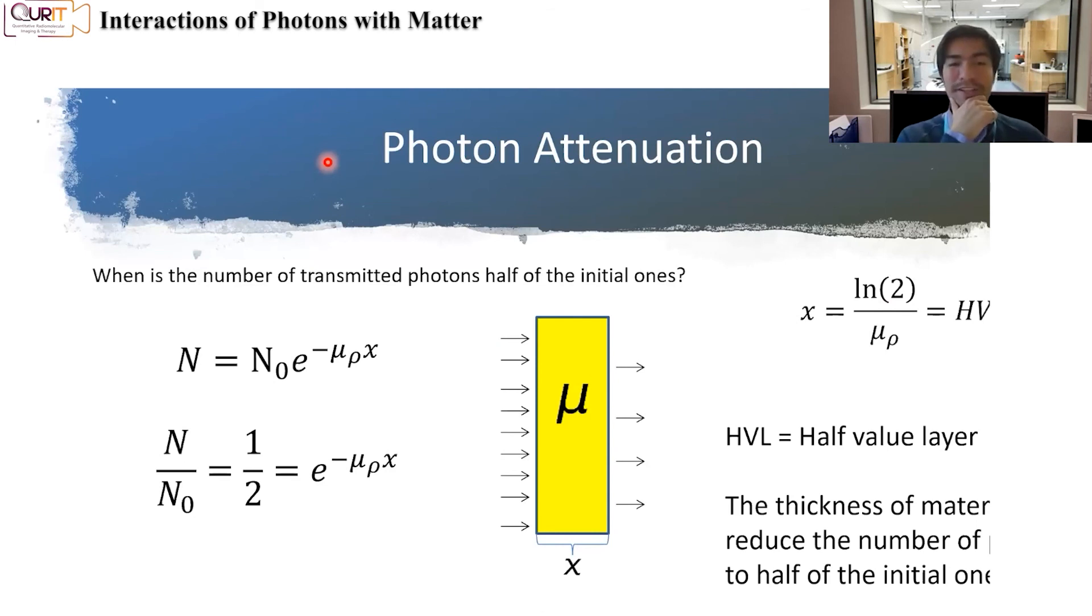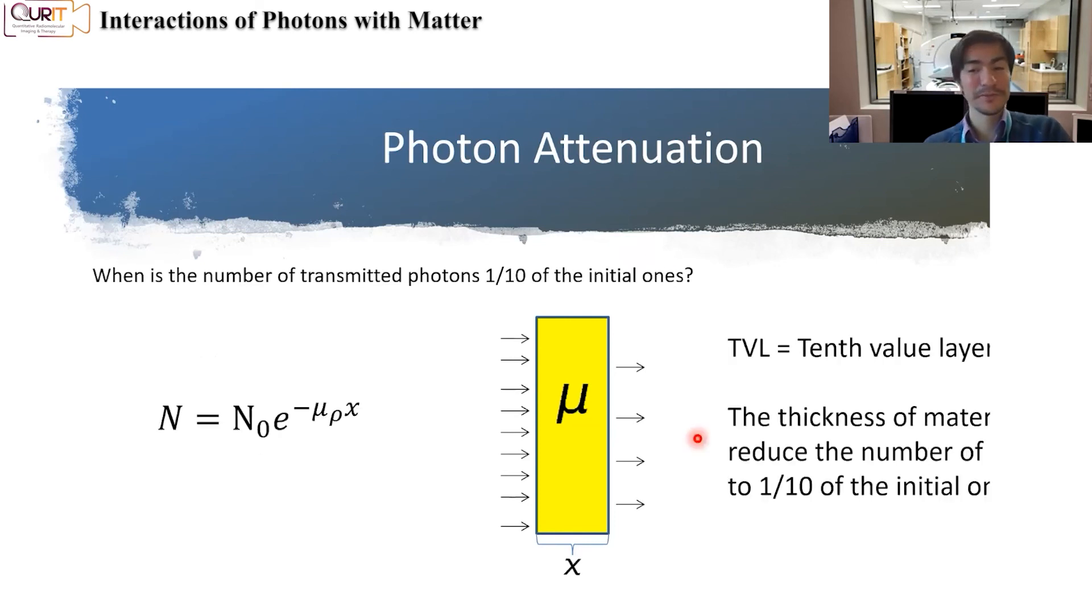But then there's these things also that we define. So you can think of what is the thickness of my material such that if I start with an initial number of photons, I get half of those photons on the other side. You can solve the equations. This is something that is called the half-value layer. It's the layer of material to reduce the number of photons by a factor of two.